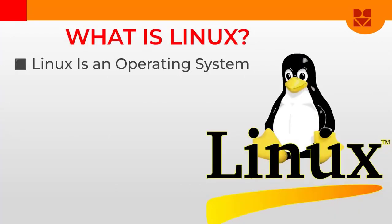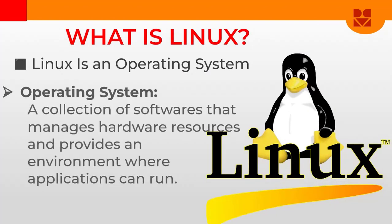So what is Linux? Linux is basically an operating system. An operating system is a collection of softwares that manages hardware resources and provides an environment where applications can run. This group of softwares looks for a way to allocate device hardware as and when needed. And not only do they manage these hardwares, but they also provide an environment — they make it possible for you to run other software or other applications while they are still running.